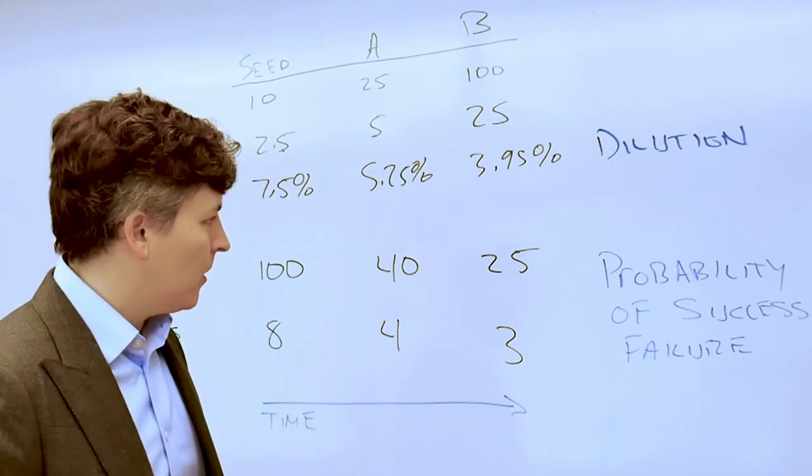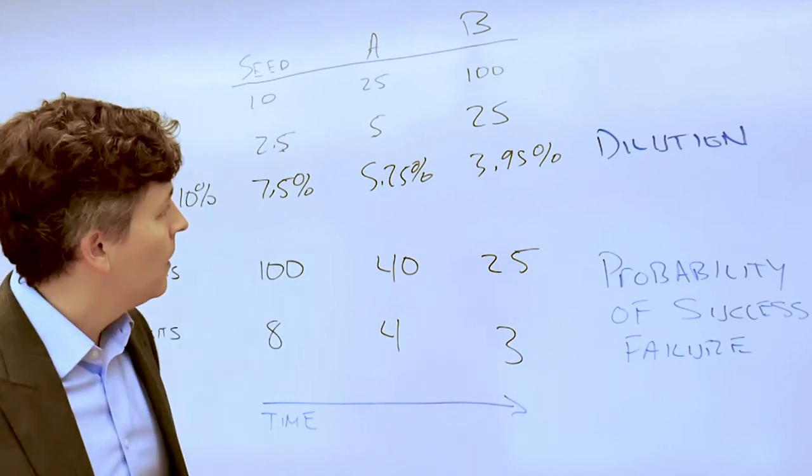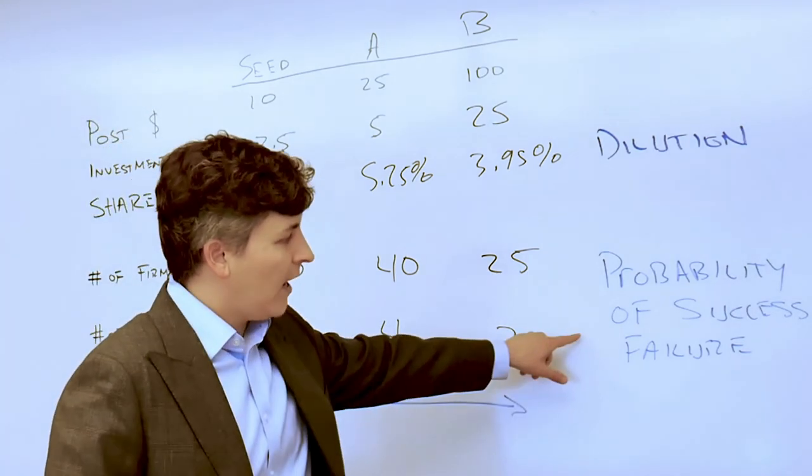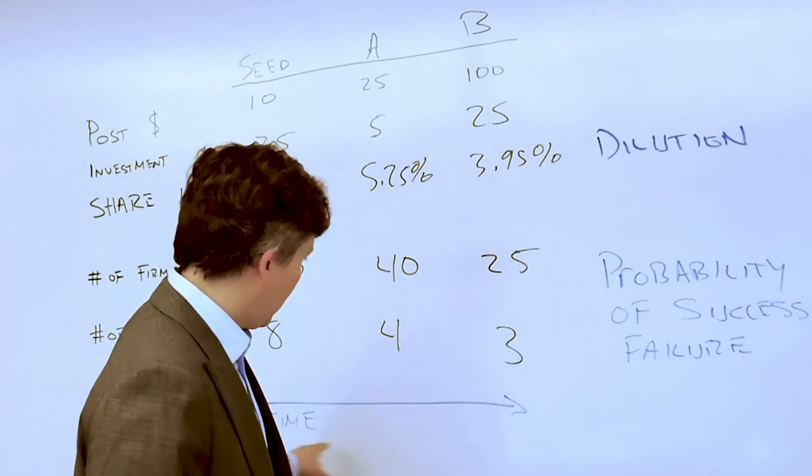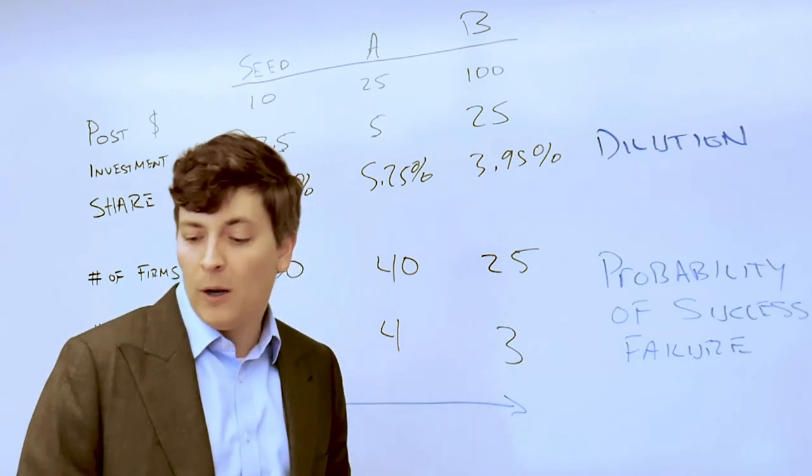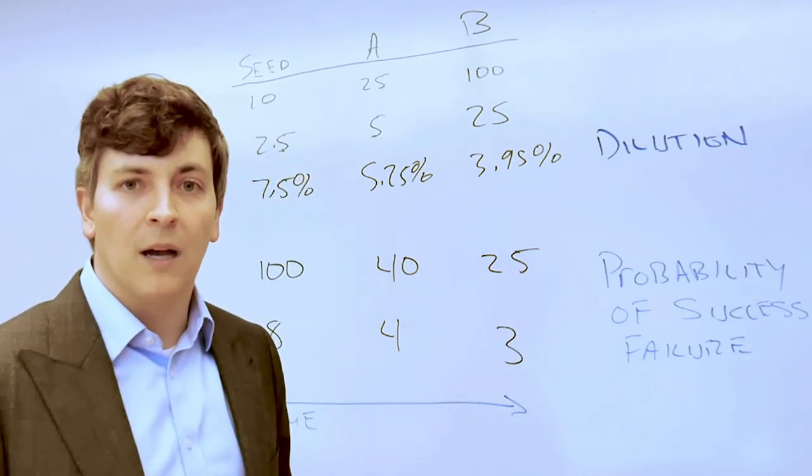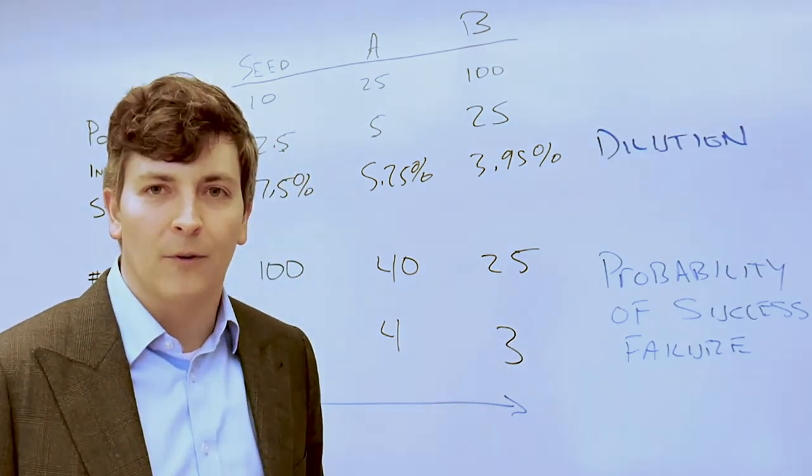So there's a lot of variability, but the three lessons to take away are dilution, factoring in the probability of success, and factoring in the time upon which value might be realized by someone who is joining a firm.